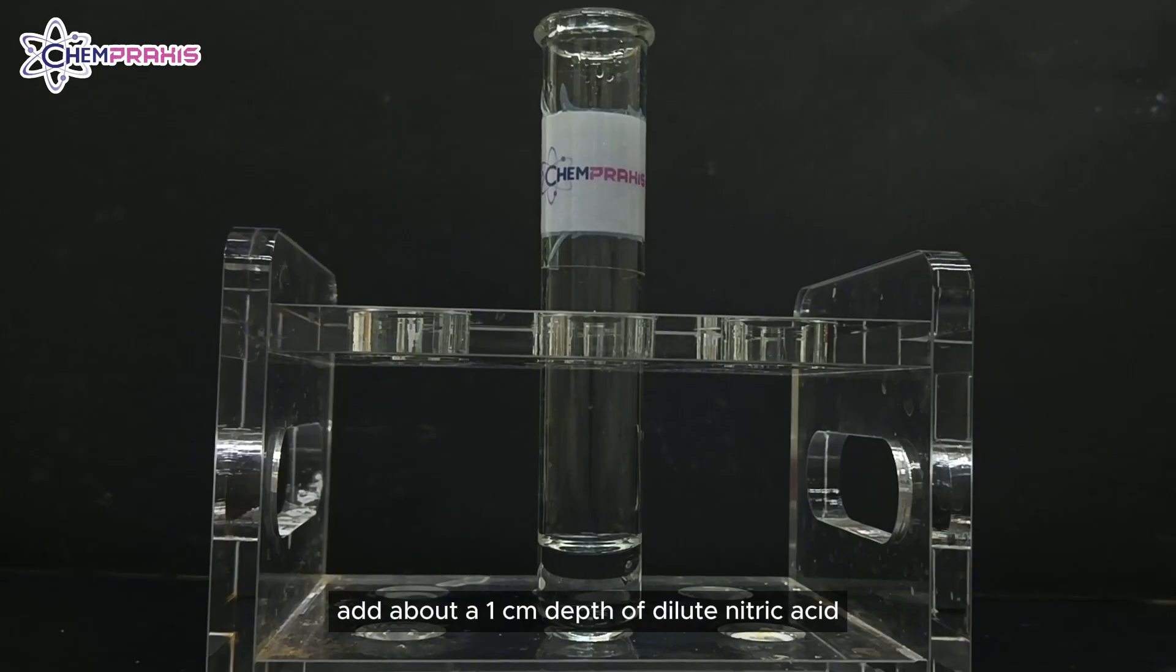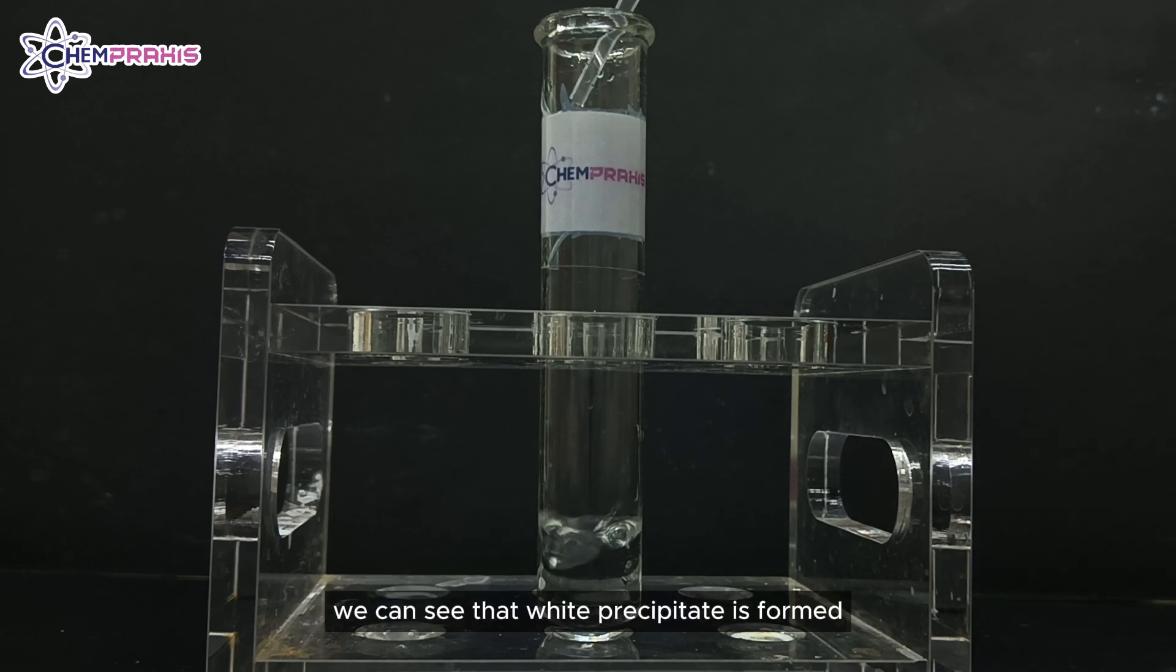Add about a 1 cm depth of dilute nitric acid followed by a few drops of aqueous silver nitrate. We can see that white precipitate is formed.